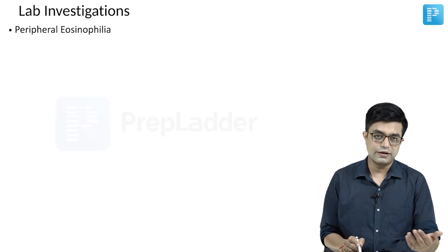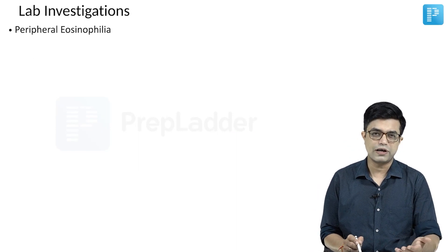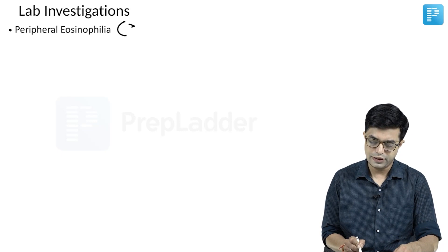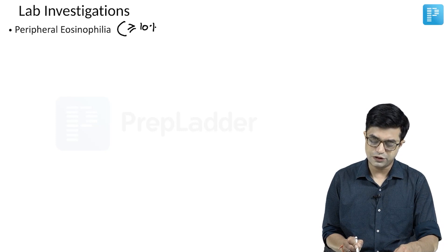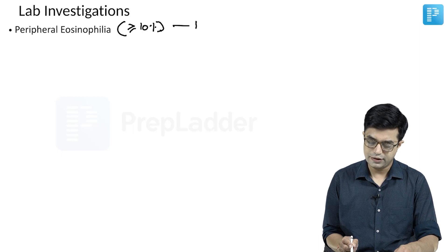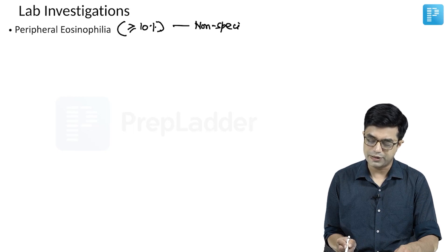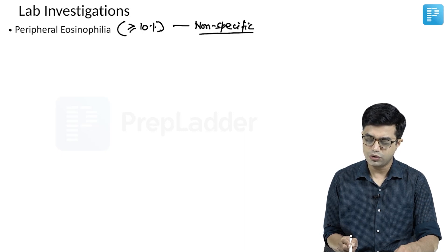Normal eosinophil count is between 1 to 5%, sometimes up to 7%. Peripheral eosinophilia equal to or more than 10% of total WBC count can be seen in eosinophilic esophagitis, but it's a non-specific finding and may or may not be present.